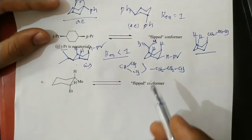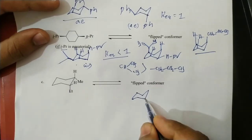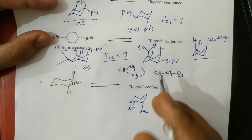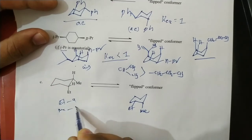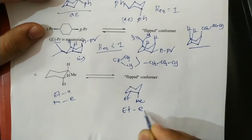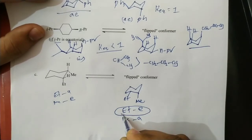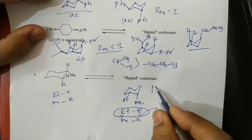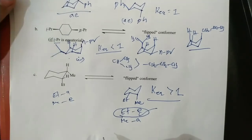For the third case: methyl is equatorial and ethyl is axial. After ring flipping, methyl becomes axial and ethyl becomes equatorial. Ethyl is a larger group, so having ethyl in the equatorial position makes that conformer more stable. Therefore K equilibrium is greater than 1.